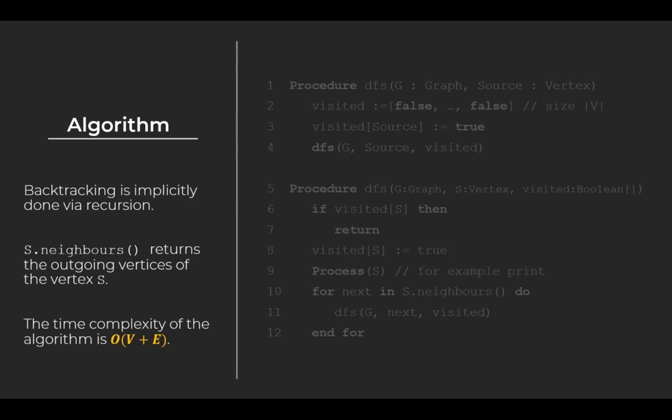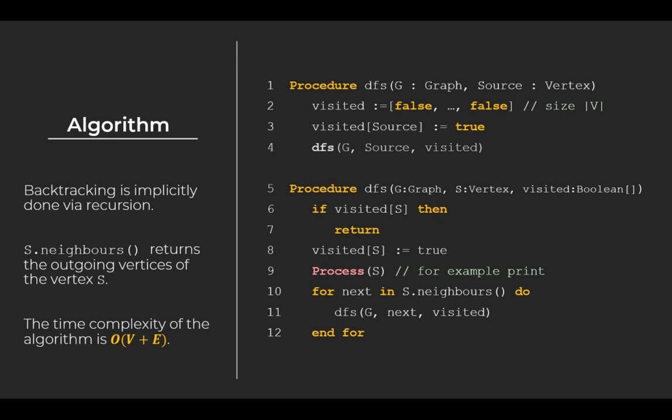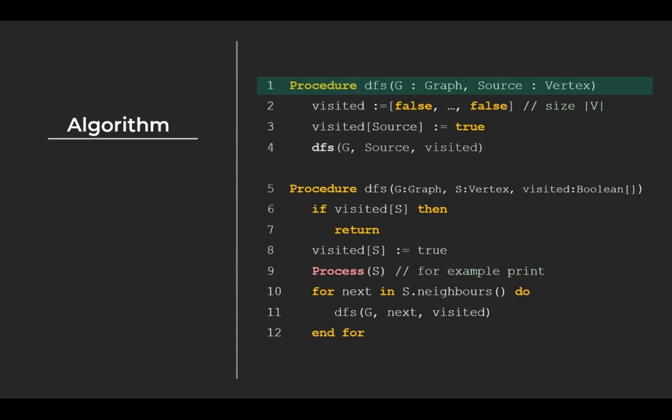The time complexity of the algorithm is of the order of O(V + E), where V is the number of vertices and E is the number of edges. The pseudocode is decomposed into two parts, each part defined by a procedure, or a method in the case of object-oriented programming paradigm. The first procedure set up the recursion and sets the starting vertex. The second procedure is the recursion itself. Let's have a closer look at each of the procedures.